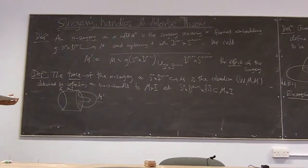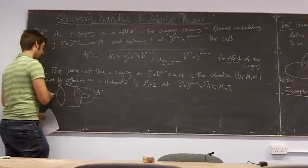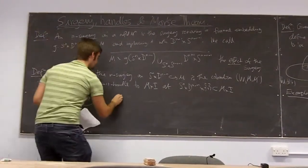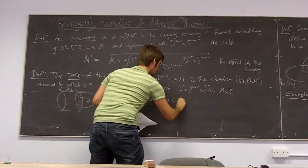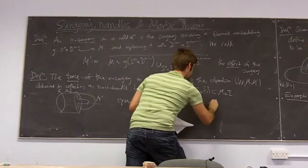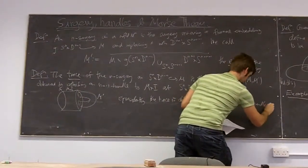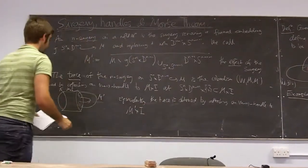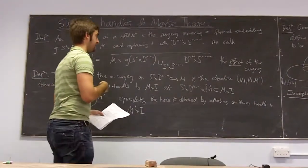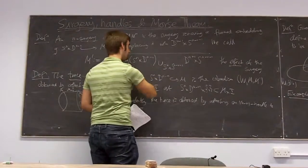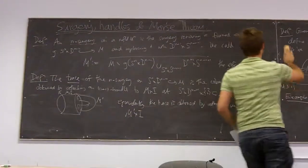There's an equivalent notion: you can compute this not as a cobordism from M to M-prime, but the other way, from M-prime to M. In fact there's a dual surgery which you do on M-prime to obtain M again. So equivalently, you can view this handle as an n-plus-one handle or an m-minus-n handle — either n-plus-one from this coordinate or m-minus-n from the other. I'll draw a picture which will hopefully make this obvious.